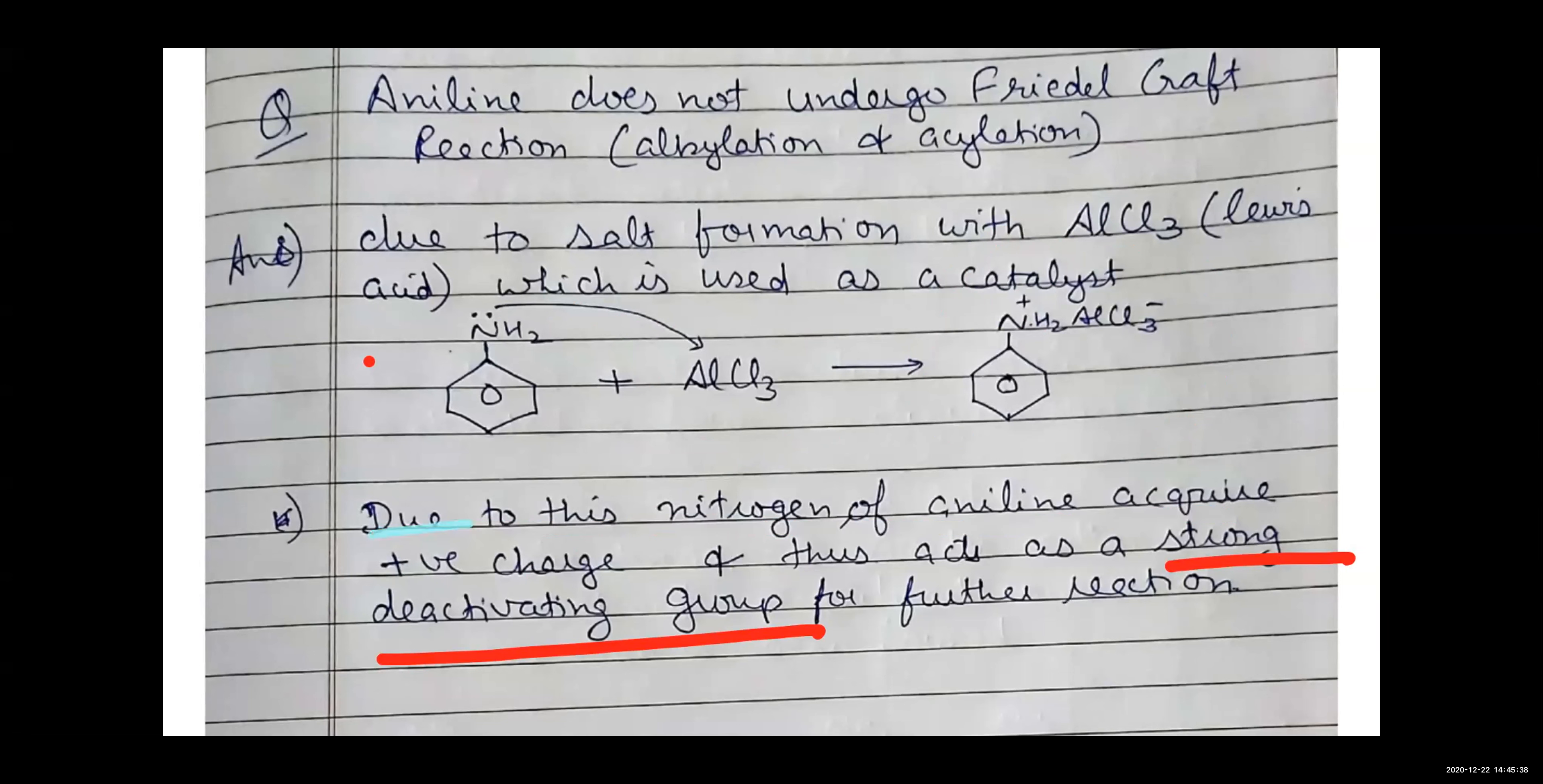Because of this salt formation, is this all over time? The whole reason is that it has made salt with aluminum chloride. After making salt, the compound is made. Nitrogen has a positive charge which has a strong deactivating effect for further reaction. This is because of aniline. There is no reaction to aniline.